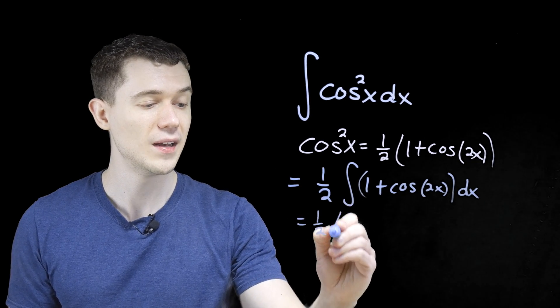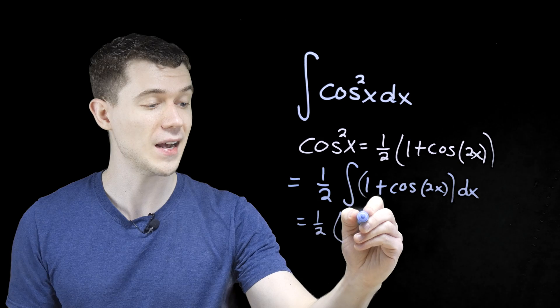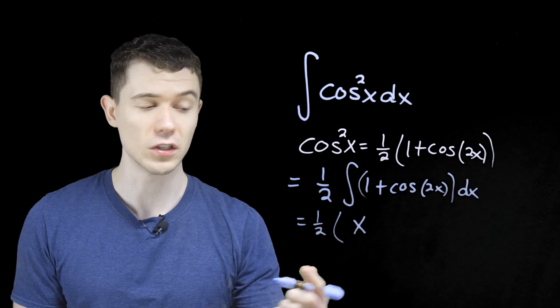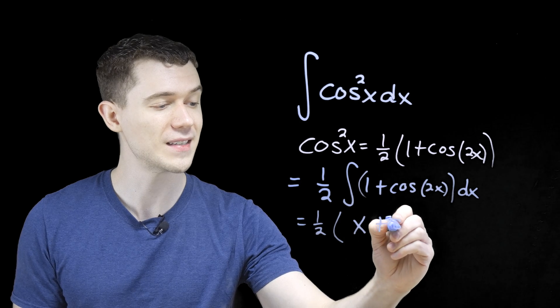We have a 1 half. The antiderivative of 1 dx is simply x. The antiderivative of plus a cosine is plus a sine.